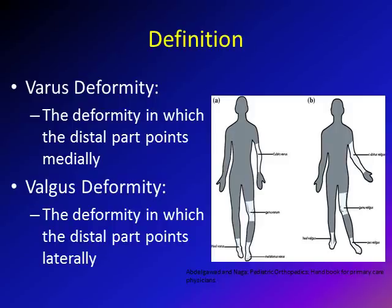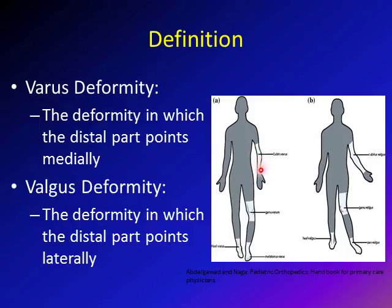Before we start, let's first discuss what varus and valgus deformity mean. Varus deformity is the deformity in which the distal part points medially — towards the midline. As shown on this graph, this is cubitus varus; the elbow is the cubitus, and varus means the distal part, which is the forearm, is pointing medially or towards the midline.